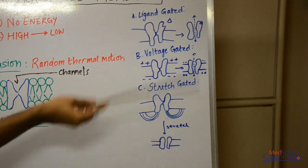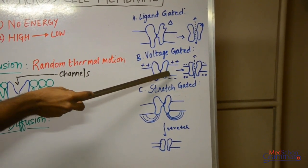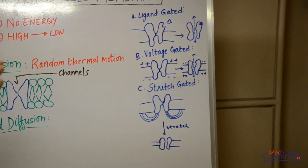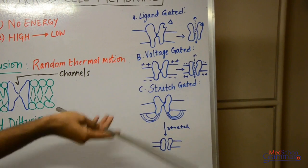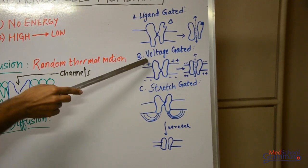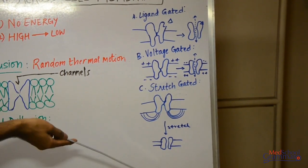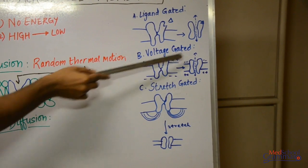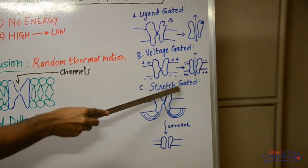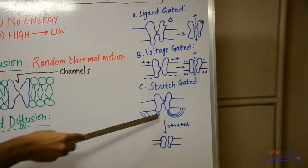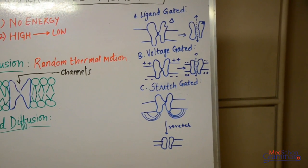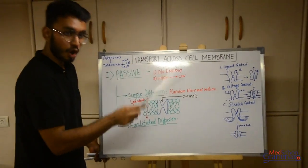The second type is voltage-gated channels. These channels are kept closed based on the voltage across the cell membrane. Normally at rest, the inner aspect of the cell membrane is negatively charged and the outer aspect is positively charged. Whenever the voltage changes — that is, the charges reverse at that site — this causes opening of the gate and the protein acts as a channel. So voltage-gated channels are sensitive to the voltage across the cell membrane. The third type is stretch-gated channels — these are mechanosensitive channels; whenever there is stretching of the cell membrane, the channels open.